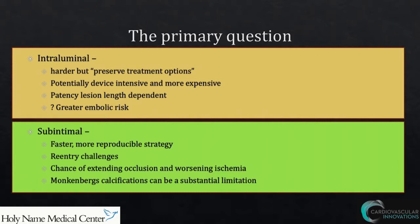Intraluminal recanalization long-term results are certainly dependent upon lesion length, much more so than for a subintimal approach. And when you're crossing that lumen, which is laden with very friable and embologenic atheroma, there's a greater risk of downstream debris, which might be a problem. At least that's my opinion on that, which may not be shared uniformly.